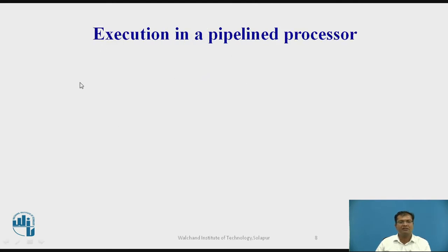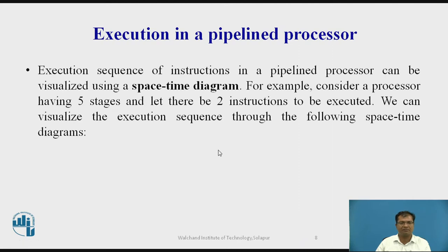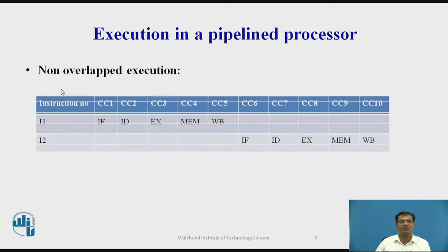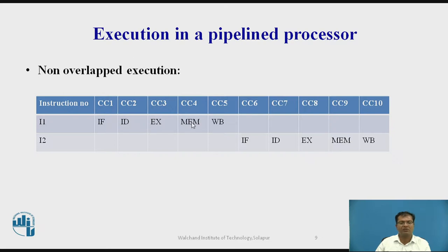The execution sequence of instructions in a pipeline processor can be visualized with the help of a space-time diagram. Based on non-overlapped execution, instruction I1 has five stages: instruction fetch, instruction decode, execution, memory access, and write back — requiring five clock cycles. Since it is non-overlapped, I2 begins from clock cycle 6, and its fetching takes place in clock cycle 6.